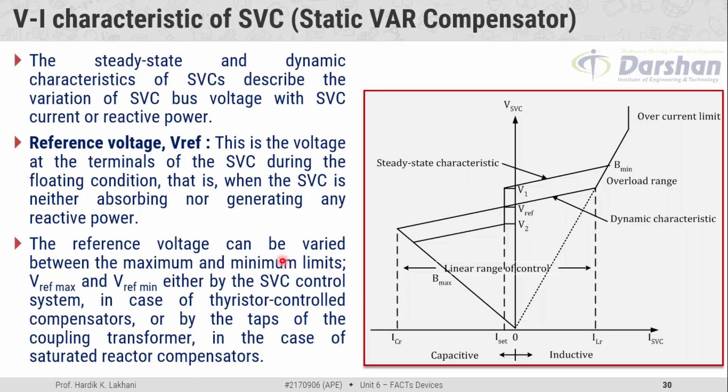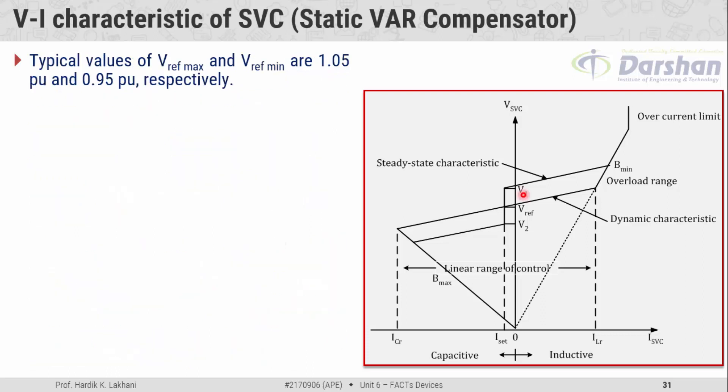There are two ways by which we can change the voltage across the SVC, and it depends on the construction of the SVC. If thyristors are present, then by controlling the firing angle; if thyristors are not present, then by changing the type of coupling transformer. In short, the variation in voltage is allowed from 0.95 per unit to a maximum of 1.05 per unit.